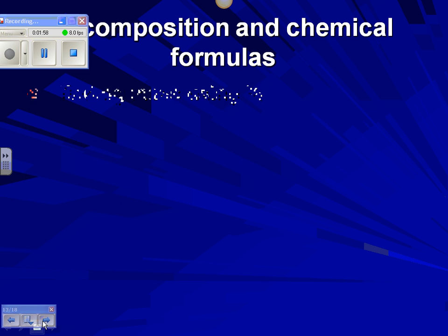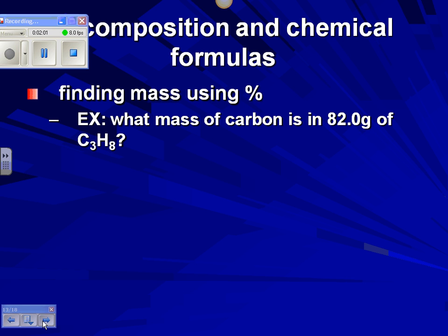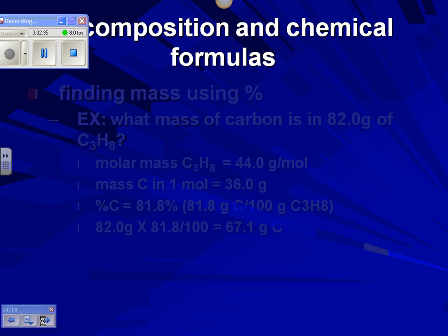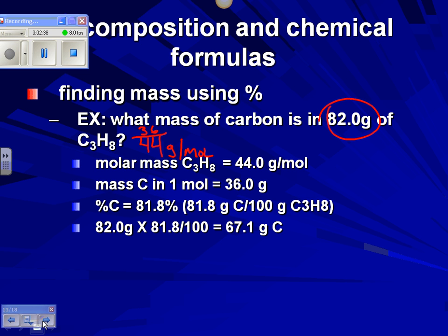If we have propane again with a molecular mass of 44 grams per mole, and we had 82 grams of the compound — our carbon was 36 grams, which is 81.8% — we just multiply that percent times 82 and we end up with 67.1 grams total. Pretty simple: keep in mind it's just part divided by the whole.